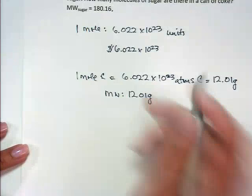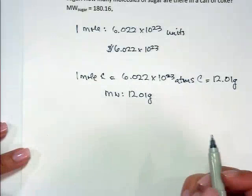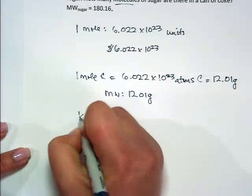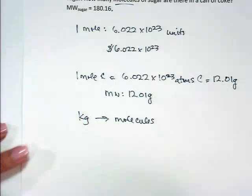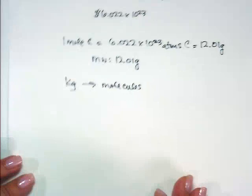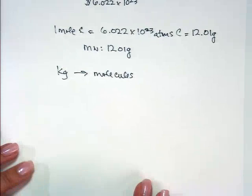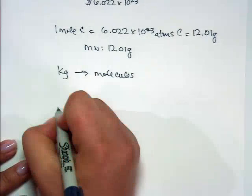So in this problem, we are asked to go from kilograms to molecules. The number of molecules in one can of Coke. When I do these problems, I like to set them up like railroad tracks and cancel all my units out to make sure I get to the right unit. And since we start with kilograms, that would be 0.004 kilograms.